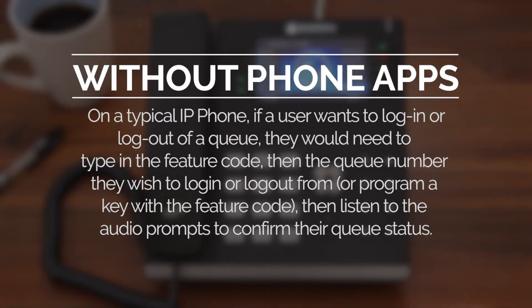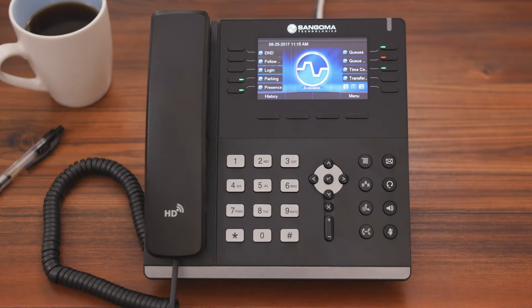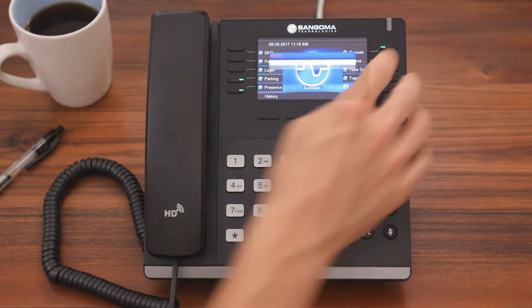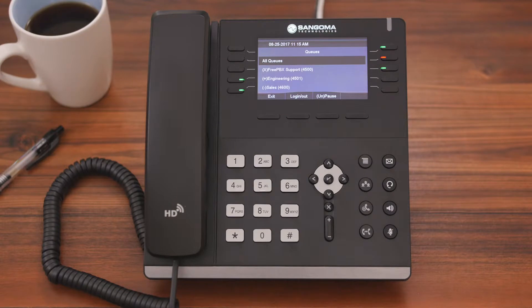For users who frequently log in and log out of individual queues, remembering all the different queue numbers as well as dialing in to check your login status — that just gets cumbersome. But with the Queue Agents application, users can quickly view the different queues they are members of, log in or log out of any of them, and check their queue status simply by navigating the phone's display.